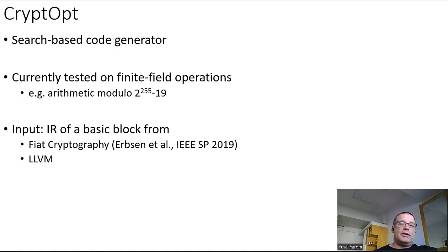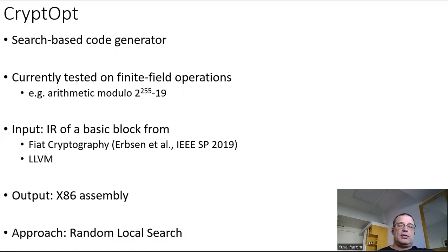The input to Cryptopt is a basic block in intermediate representation. So it's a low-level language. Basically, it is a sequence of instructions in SSA format. We can get this code either from Fiat Cryptography, which is a project published in IEEE Security and Privacy 2019 that generates code for finite field operations. Or we can just compile some code with LLVM and extract the intermediate representation of basic blocks. And what we output is x86 assembly. We make sure that this x86 assembly is efficient by using random local search.